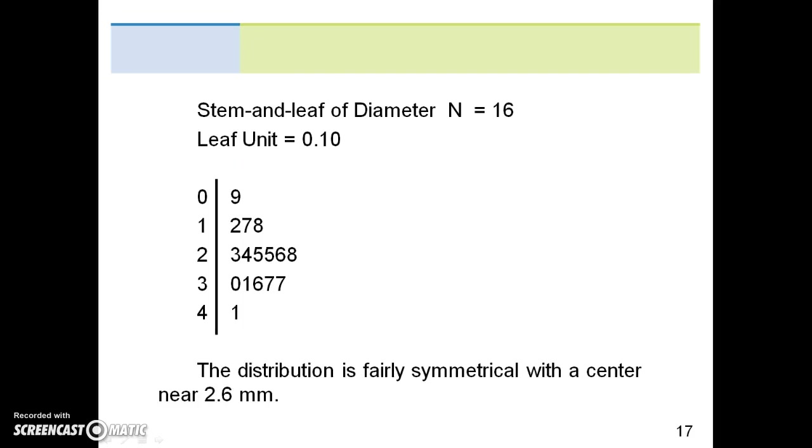The stem and leaf of diameter, the total sample size is n equals 16. Here, we only have one digit, but with a decimal, so the leaf unit is 0.10. So the left-hand side shows the stem, the right-hand side shows the leaf, and the line is ultimately the decimal point.